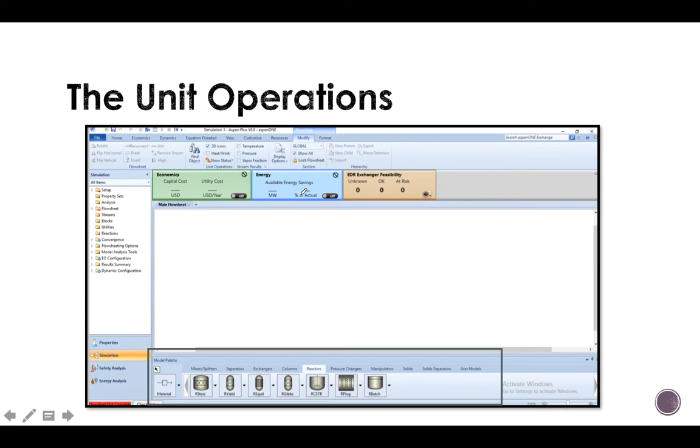Where can you find those? First things first, go to the simulation environment and then go to the model palette. In the model palette, you will be able to see the sections right here. These are the ones that we are studying, and these are the ones that we are not going to use in this course. Once you click on, for instance, reactor, you will show all the models you can use. And that's what I wanted to show you about unit operations.